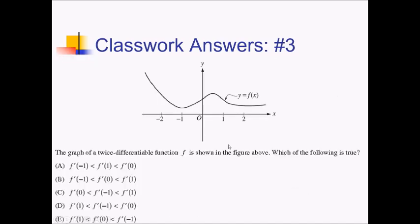For this problem, we're given the graph of f, and we want to put in order f prime of negative 1, f prime of 1, and f prime of 0. So these are all talking about the slope of this graph here. We're not going to be able to get exact values necessarily, but we can figure out how they are relative to each other based on things like positive, negative, or 0. Let's take a look at each of them individually.